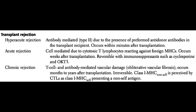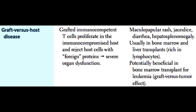Graft versus host disease is not a form of rejection but occurs when the transplanted organ carries along with it some white blood cells from the donor. Those donor white blood cells will start to attack the new host throughout the body, since any antigen the recipient has — in any organ system — will be perceived as foreign by the donor's T cells and B cells. This results in severe organ dysfunction, and typically these patients will have a maculopapular rash, develop jaundice and hepatosplenomegaly, and usually get diarrhea as well.